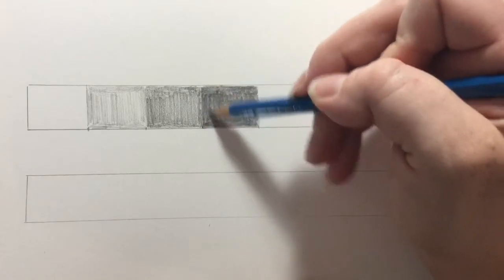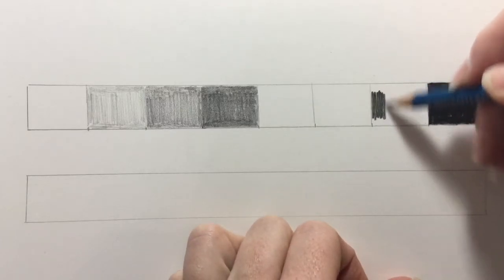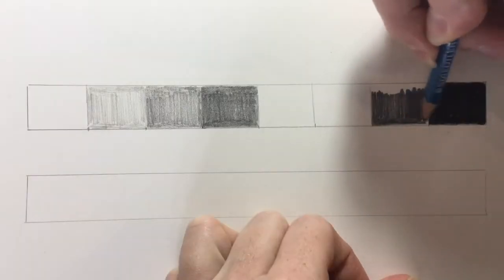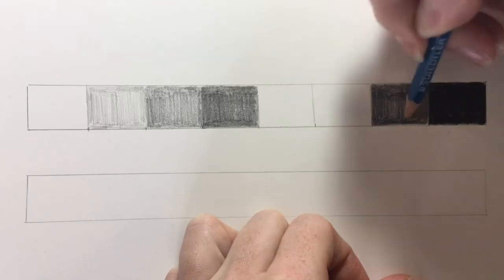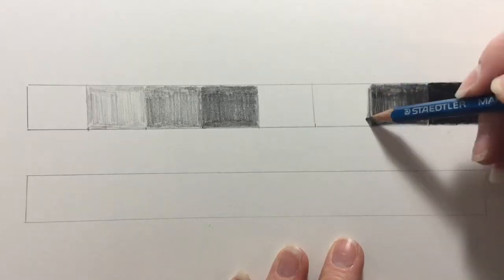Now I'm going to start working my way from the other end of the value scale, the darker end of the value scale, toward the middle. I like to do that because it helps me make sure that each box looks different from the one next to it.